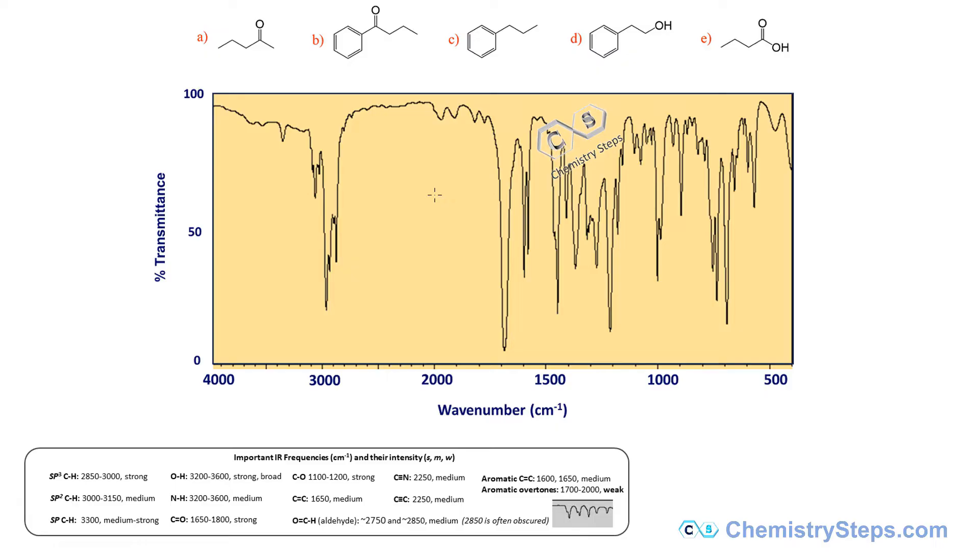IR spectroscopy is not a comprehensive spectroscopy. This means that you are not going to determine the structure of the compound most of the time solely based on the IR spectroscopy. IR spectroscopy is used largely to identify the functional groups that we have in the molecule. And for that, we don't have to look at all the peaks on the IR spectrum.